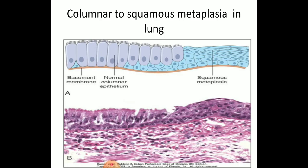In this example, you can see the respiratory tract is lined by normal columnar epithelium — that is pseudostratified ciliated columnar epithelium. But due to cigarette smoking, there is a metaplastic change in which the columnar epithelium is replaced by squamous epithelium, called squamous metaplasia, which may be the cause for development of squamous cell carcinoma if the stimulus is not removed.